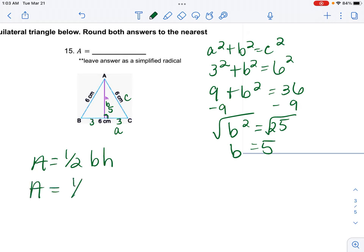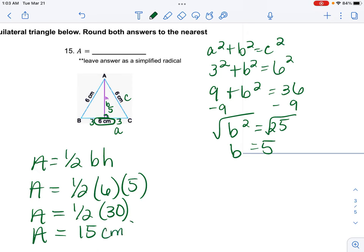So I have 1 half, and my base is 6. I only split the 6 up in order to find that height so I could use Pythagorean theorem. My base is 6 and my height is 5. So I get 1 half times 30, so my area is 15 centimeters squared.